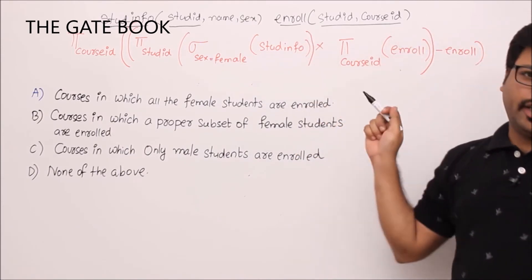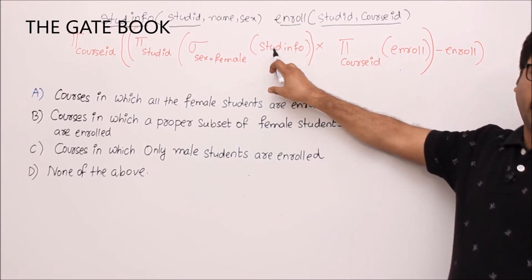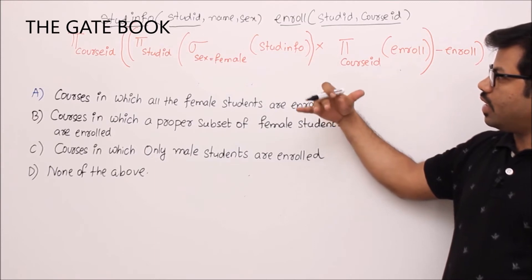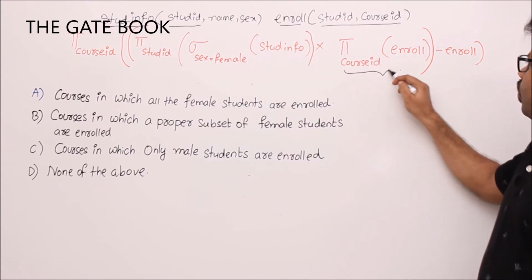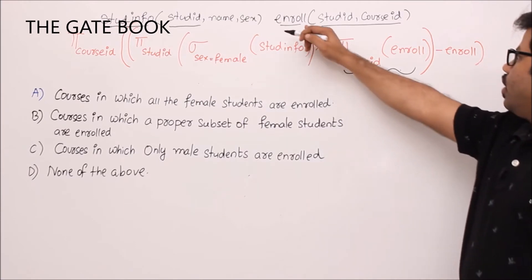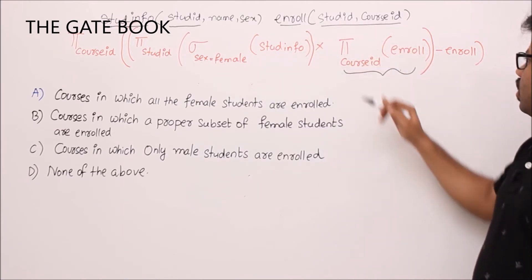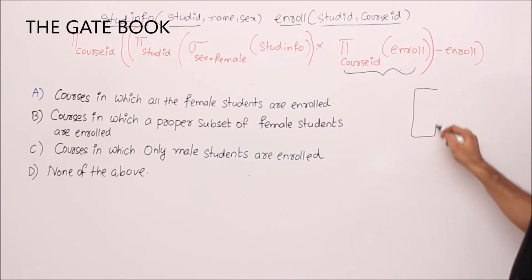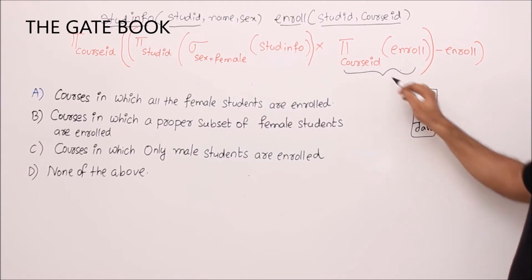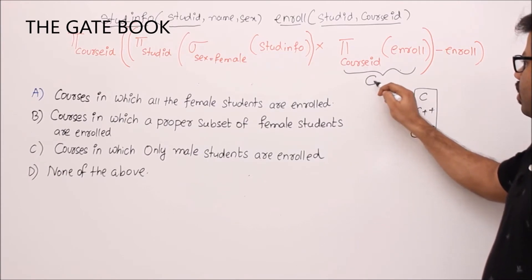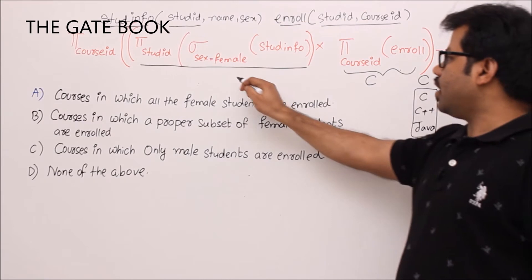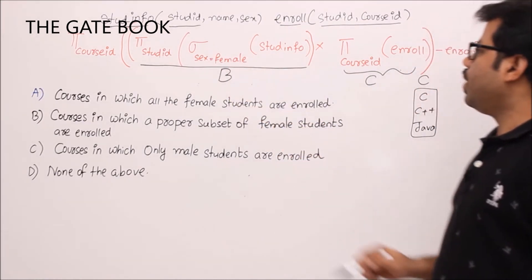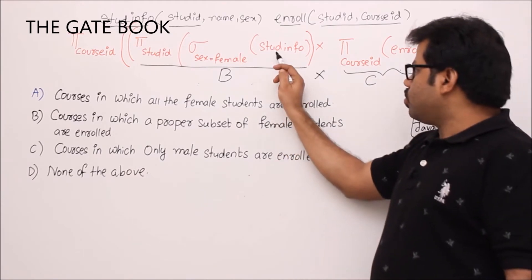We need to find the output of this new query. Breaking it into blocks: one independent part selects course IDs from enroll, giving us all the course IDs — let's call this table C, containing courses like C, C++, Java.